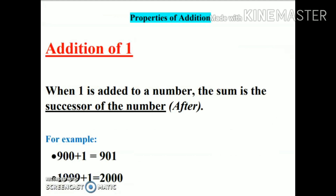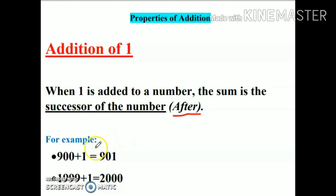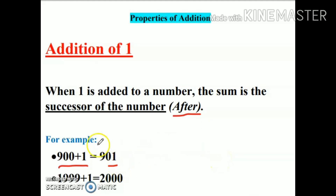Let us discuss the properties of addition. First property: addition of one. When one is added to a number, the sum is the successor of the number — that is, the number which comes after. For example, if the number is 900 and I add one, my answer is 901. There is no need to add and then find the answer; you can simply write the number which comes after.